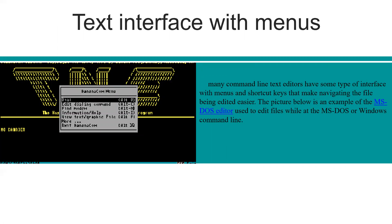Next is the text interface with menus. It uses special shortcut keys — like Ctrl-C, Ctrl-V, Alt-Tab, Shift, Alt-Shift, and so on. On a text interface, we are only working with the keyboard. An example would be the old mobile phones with big buttons that helped us call somewhere. These are all old text interfaces.